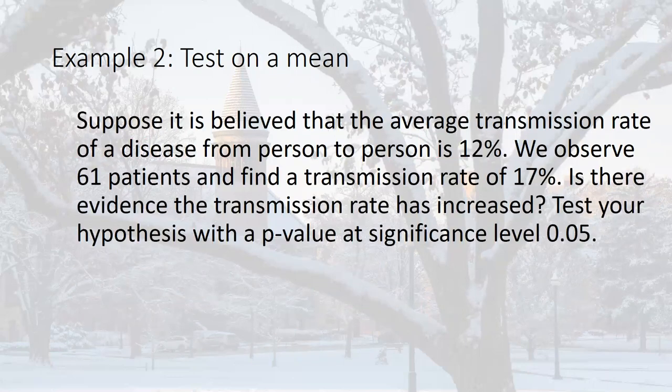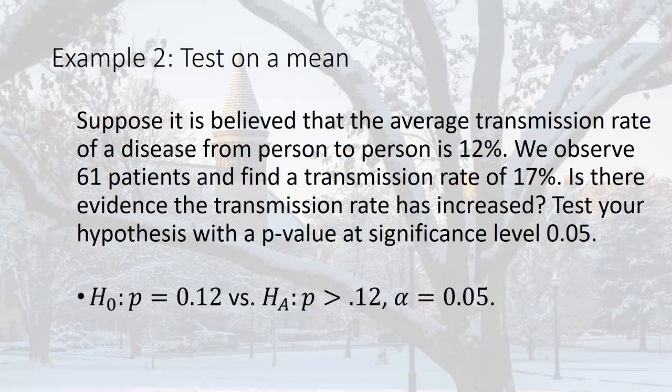Let's look at another example — a test on a mean proportion. Suppose it's believed the average transmission rate for a disease from person to person is 12%. We observed 61 patients and found a transmission rate of 17% — either you transmitted it to someone or you did not, so that's a Bernoulli outcome. Is there evidence the transmission rate has increased from 12%?